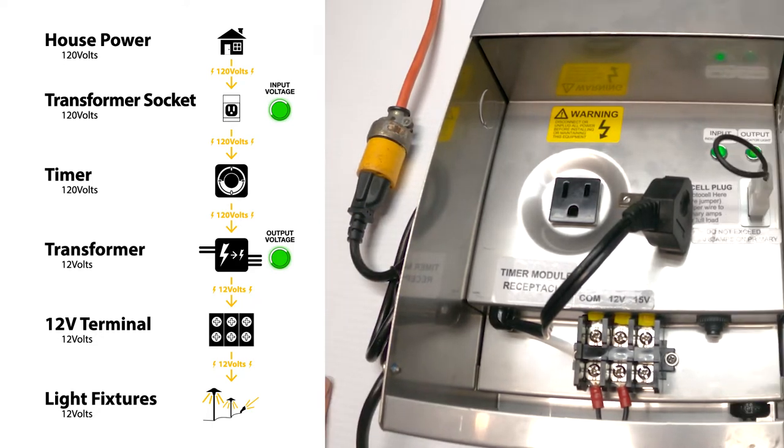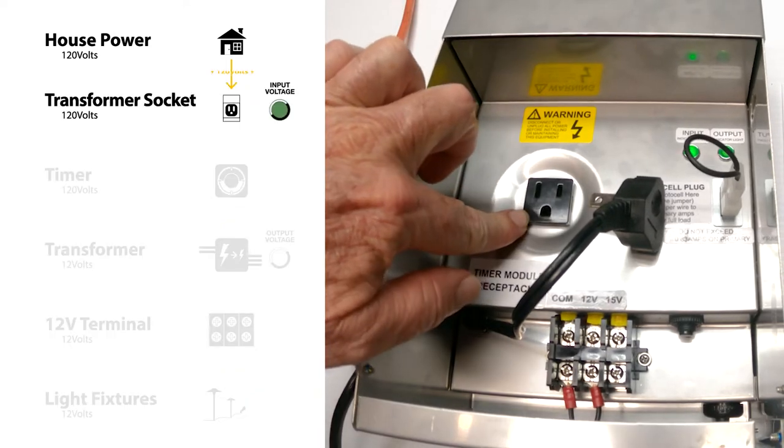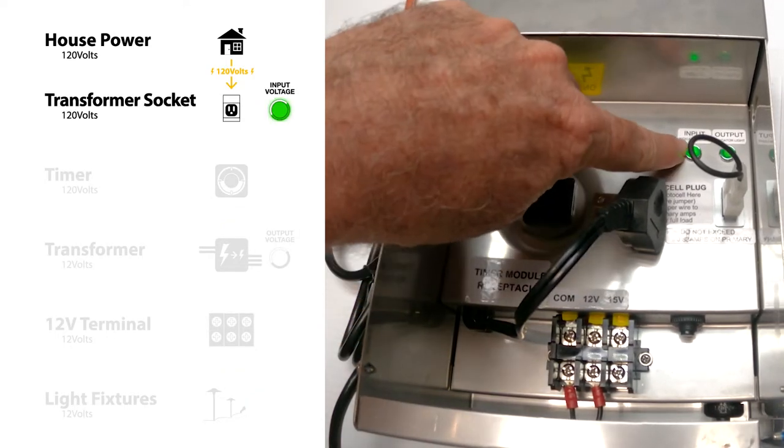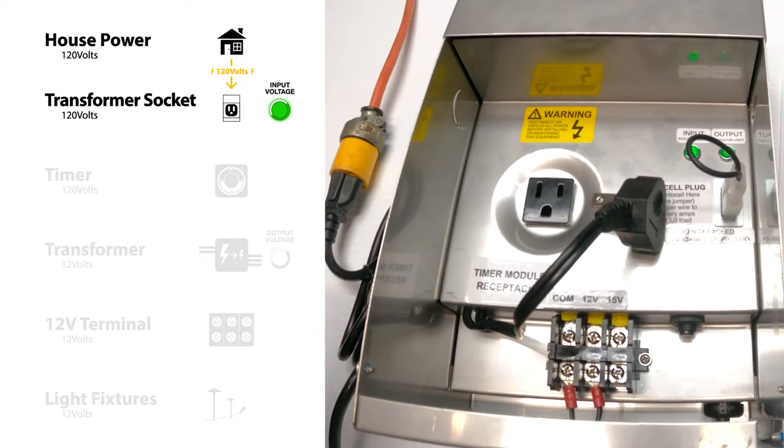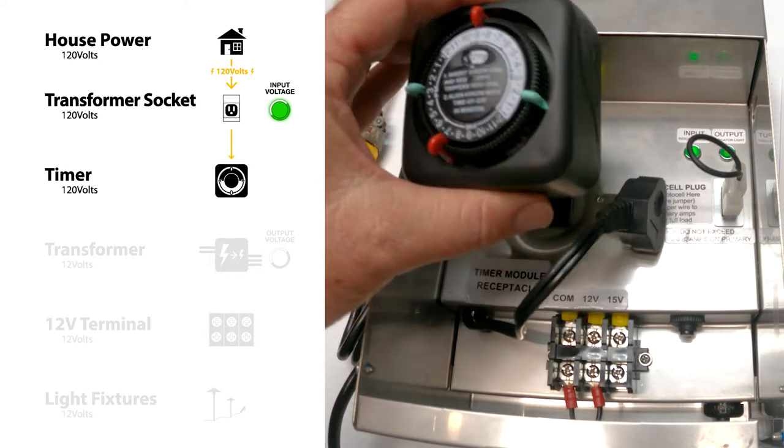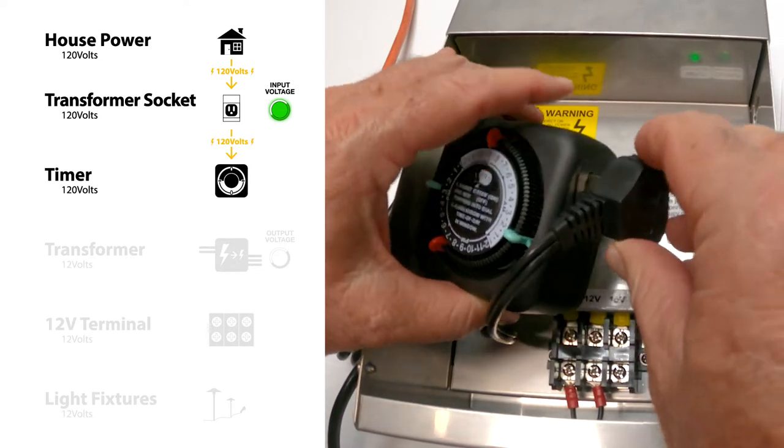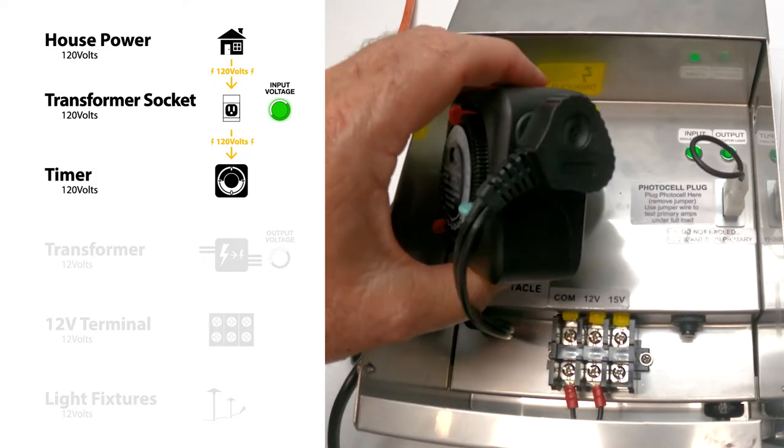And so I have 120 volts coming to the socket here inside the transformer. When it comes to the socket, a little light goes on and tells you that you're good to go. It's very simple. Then take your timer and we use this one here and there's more on the timer later in the second video. We plug the unit into the timer.